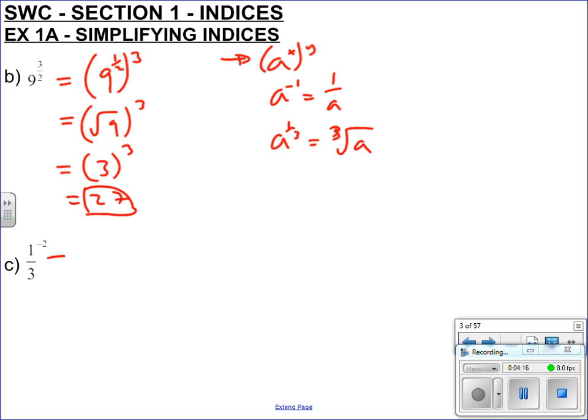Here for part C, we've got a third to the minus 2. Split it up if you need to - that's the same as a third to the minus 1 all to the power of 2. Minus 1 times 2. So a third to the power of minus 1 - remember that's the whole third to the minus 1. That's 1 over a third. I always like to do a nice big line underneath when you're dividing fractions. Remember this is still all squared.